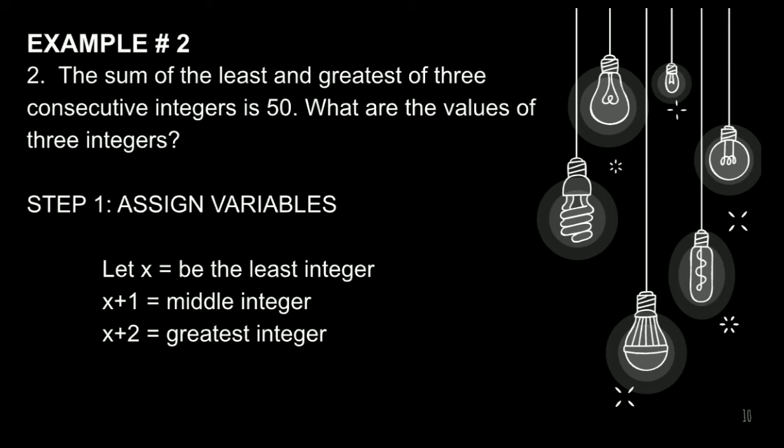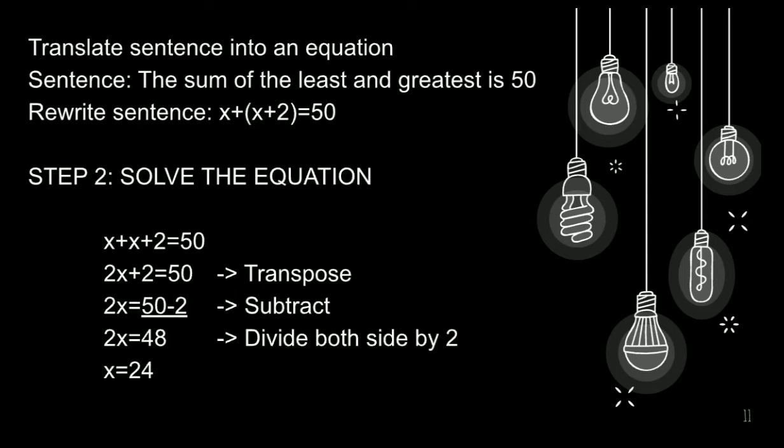Example number 2. The sum of the least and greatest of 3 consecutive integers is 50. What are the values of 3 integers? So, step 1. Assign variables. Let x be the least integer, x+1, middle integer, and x+2, greatest integer.